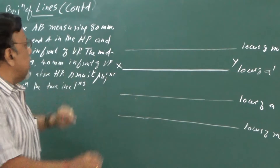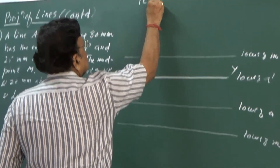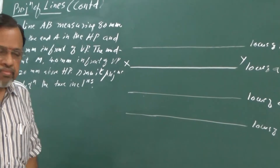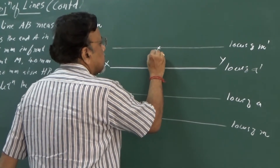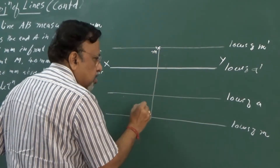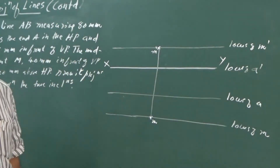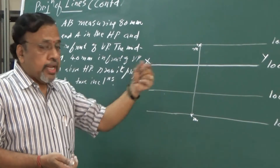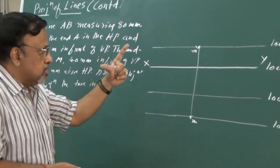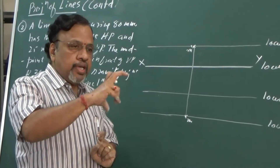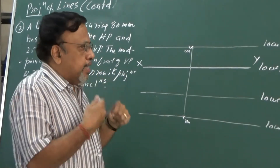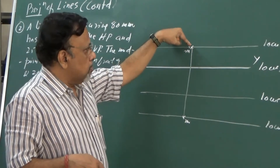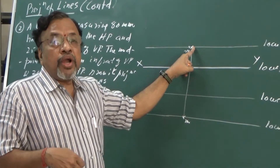The line measures 80mm, that is the true length (TL) given as 80mm. Now, since the midpoint location is given, the starting point has to be from the midpoint only. Indicate this as M-dash and draw a projector, marking this as M. Now I know TL is 80mm. In the previous instance when we did this midpoint problem, the angle was also given, but here the angle is not given. Instead, the location of one of the ends in top and front view is given.